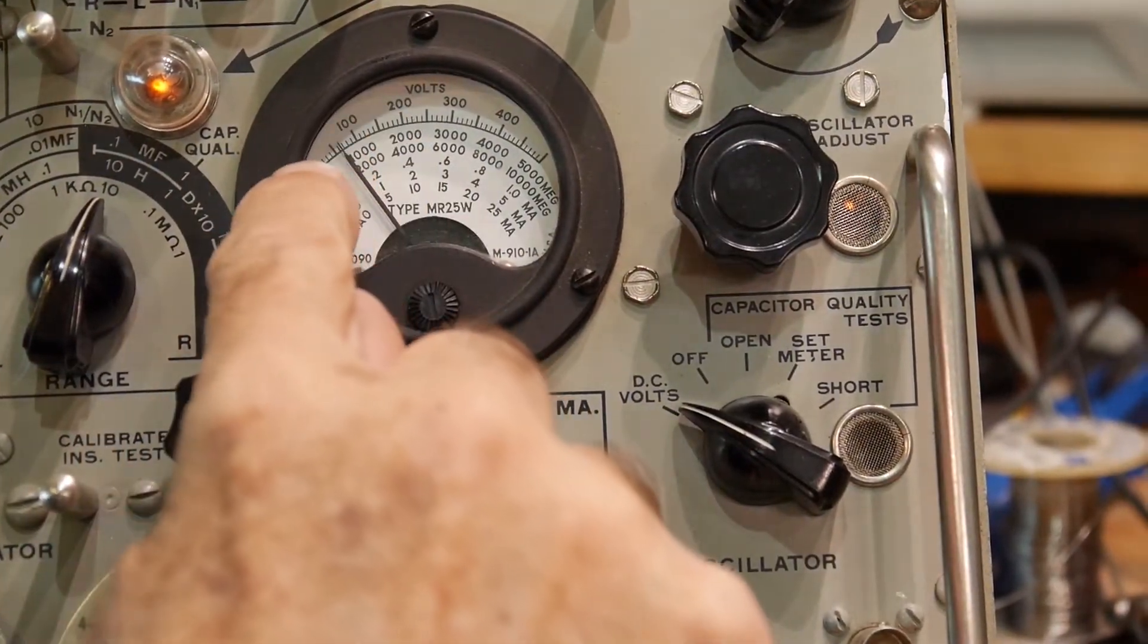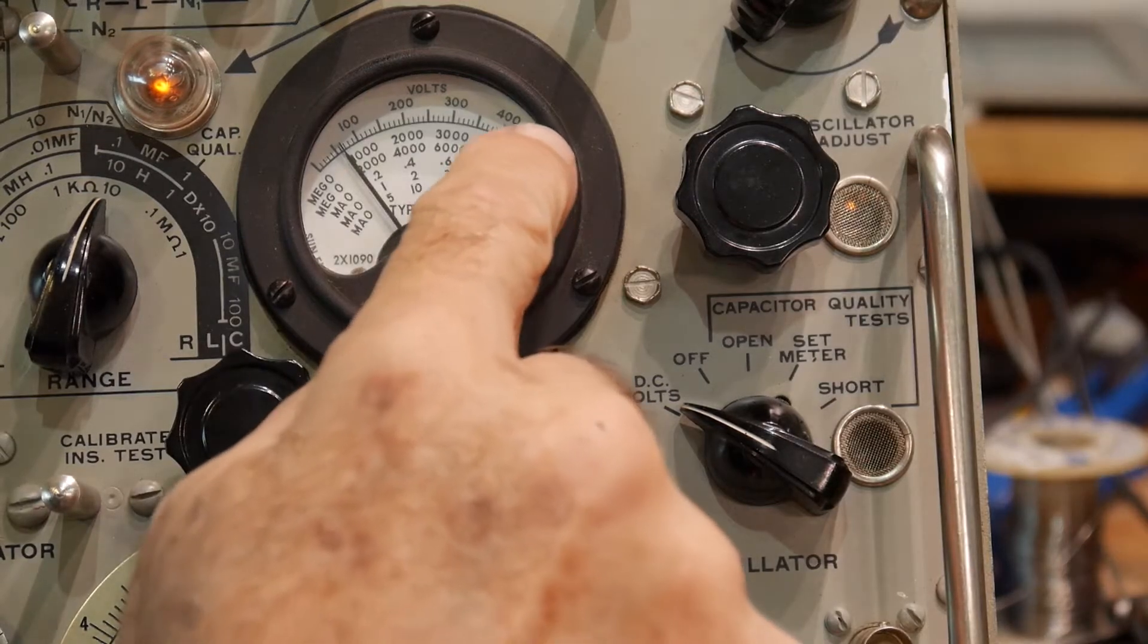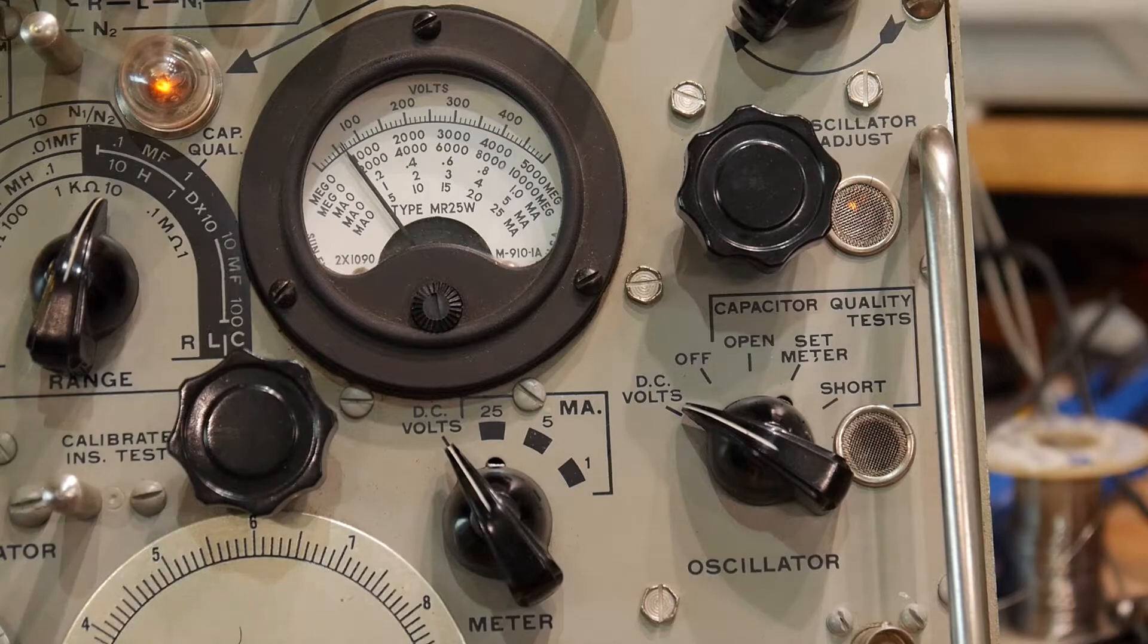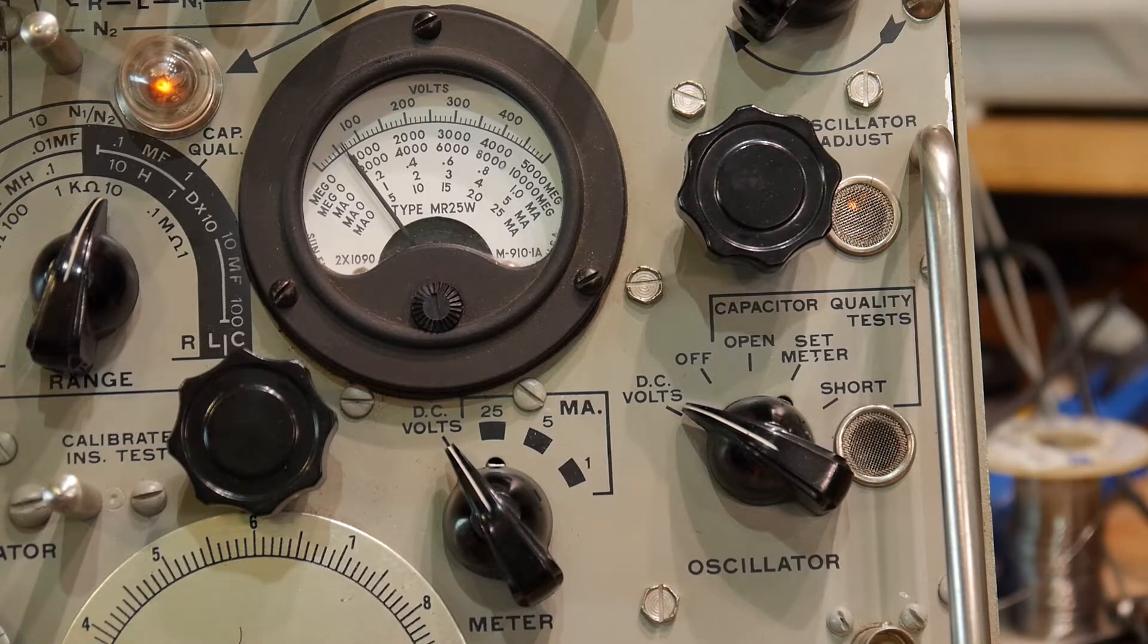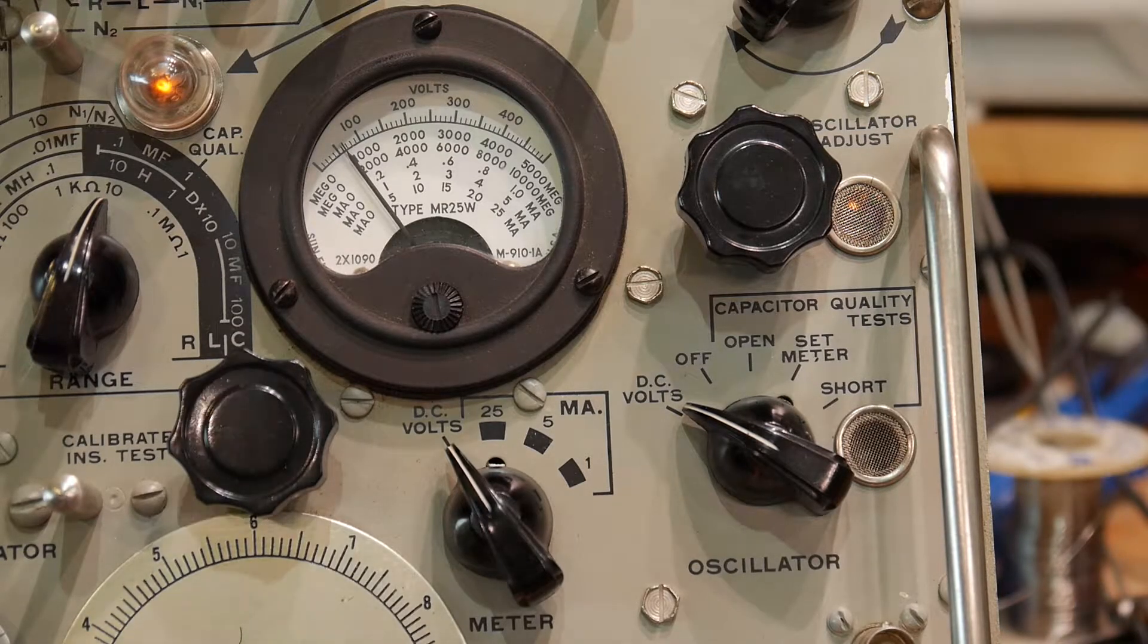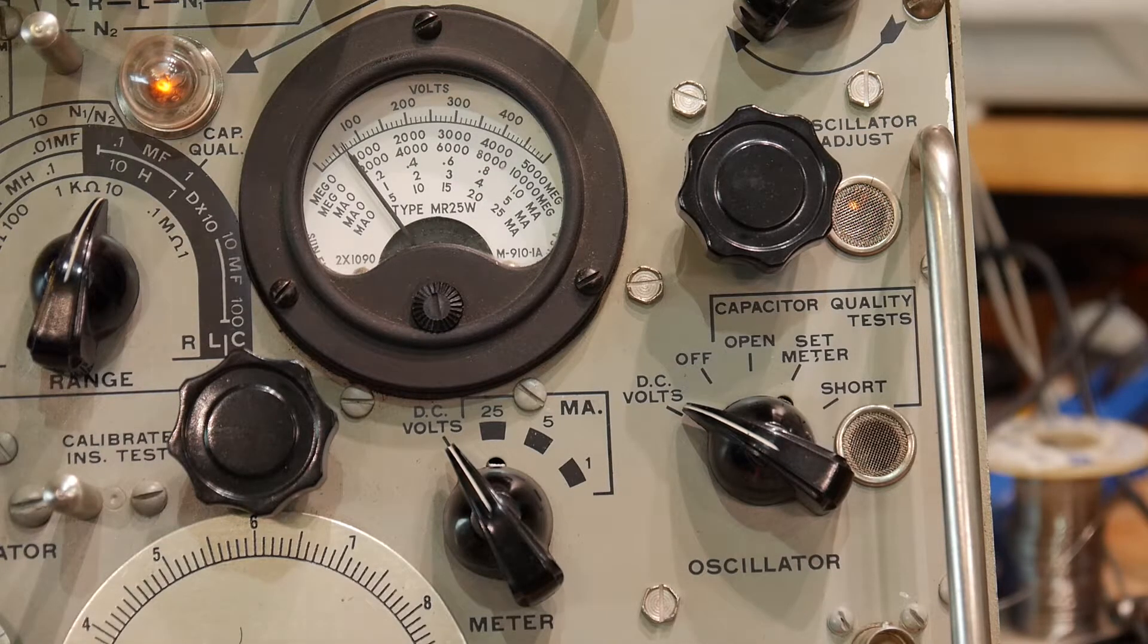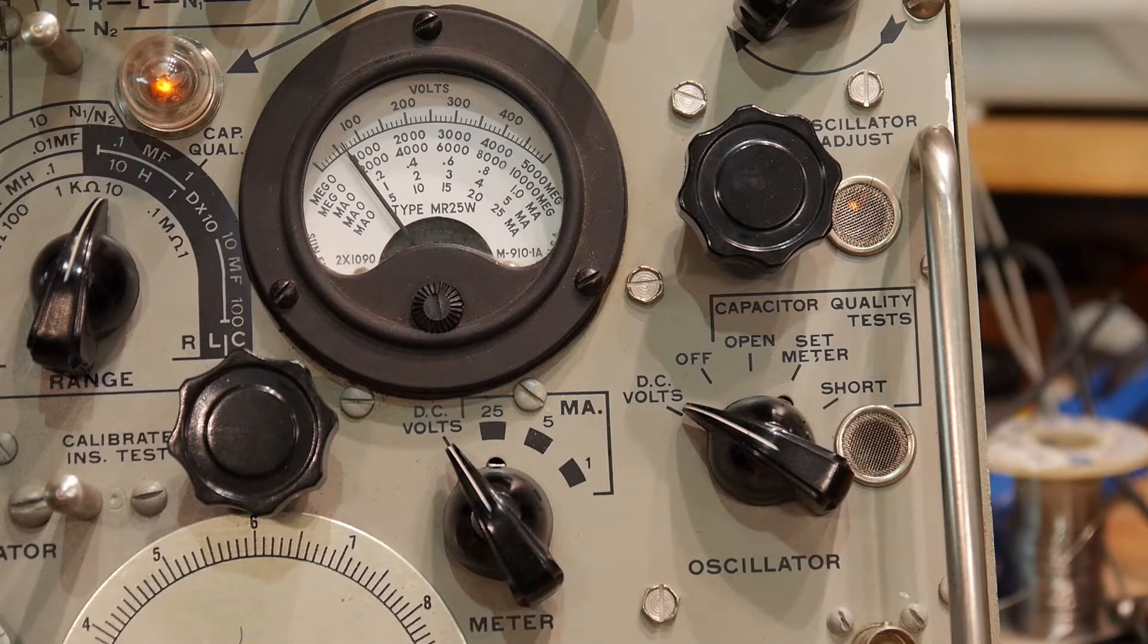So this is the zero to 5000 mega ohms scale, and we're here at about 70, so we're right at about 700 mega ohms of leakage in this wire. So it does work.